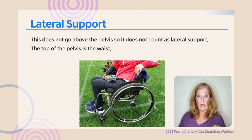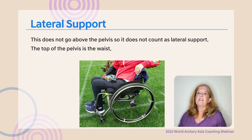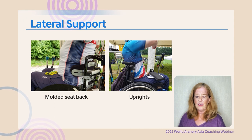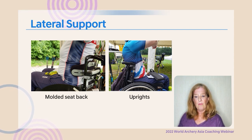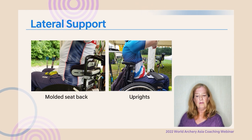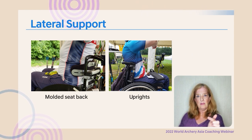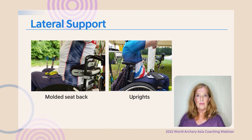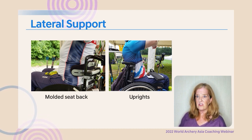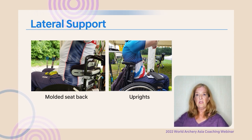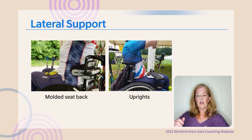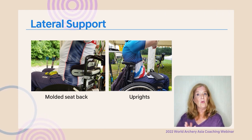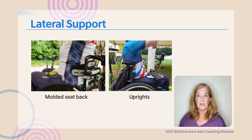Anything above the ribs is considered lateral support. For a molded seat back, you measure between the base of the sternum and the back, and as long as it is within limits it is legal. Metal uprights of the chair count as lateral support if the athlete can lean against them, but as long as they are within half the body width it is perfectly legal.